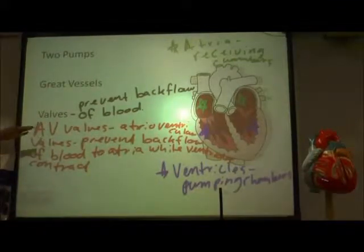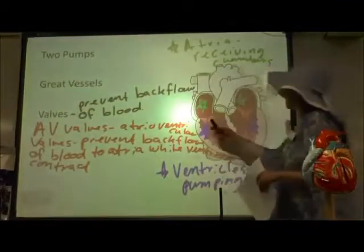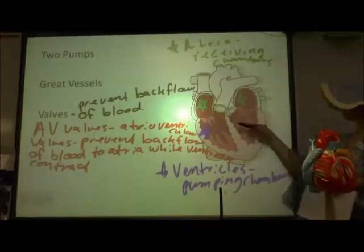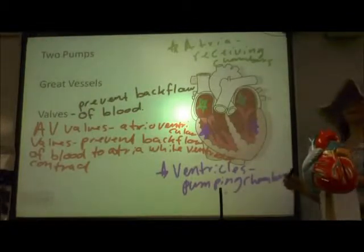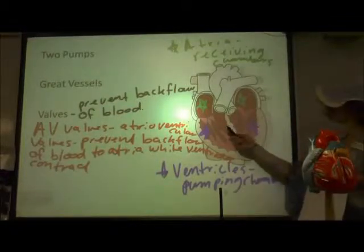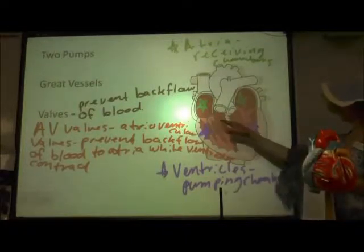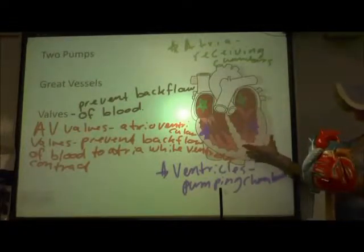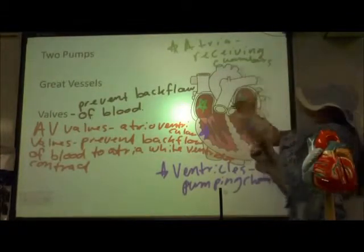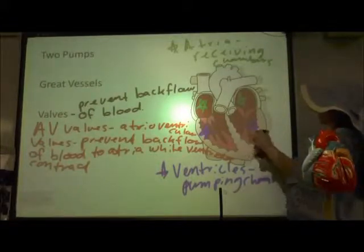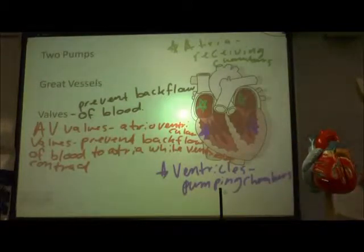The AV valves are docked to muscles in the ventricles called papillary muscles by structures called chordae tendineae, or heartstrings. These are strong connective tissue attachments that hold the AV valves to the papillary muscles so that during strong forceful contraction, the valves don't blow open back into the atria. When the ventricles contract, the papillary muscles contract and pull on the chordae tendineae so the AV valves stay shut.